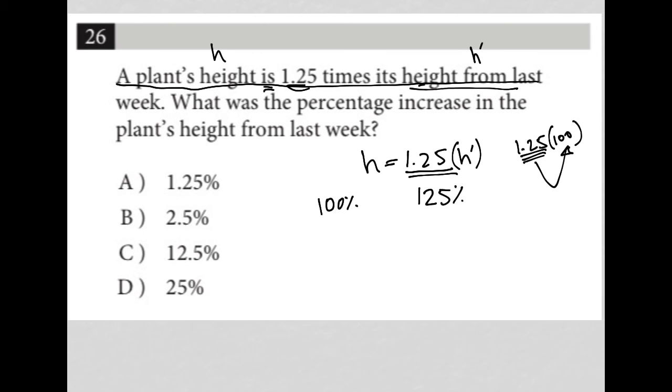So the answer to this question is all about, well, what's the increase to get from here to there, right? So to get from 100% to 125%, we're just increasing by 25%. And therefore, the correct answer here is choice D.